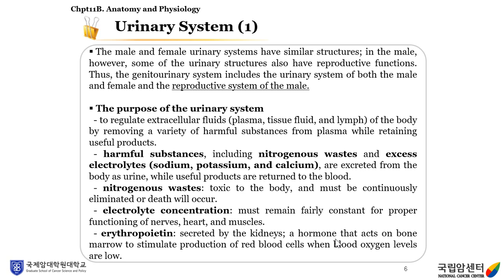Harmful substances, including nitrogenous waste and excess electrolytes, are excreted from the body as urine, while useful products are returned to the blood. Nitrogenous waste are toxic to the body and must be continuously eliminated or death will occur. Electrolyte concentration must remain fairly constant for proper functioning of nerves, heart, and muscles. Erythropoietin is secreted by the kidneys and acts on bone marrow to stimulate production of red blood cells when blood oxygen levels are low.